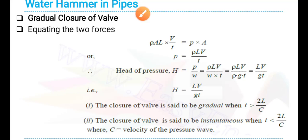Dear friends, good morning. In the last class we saw the expression for pressure head or rise in pressure head, capital H equals LV by GT, when the closure of valve was gradual or slow.